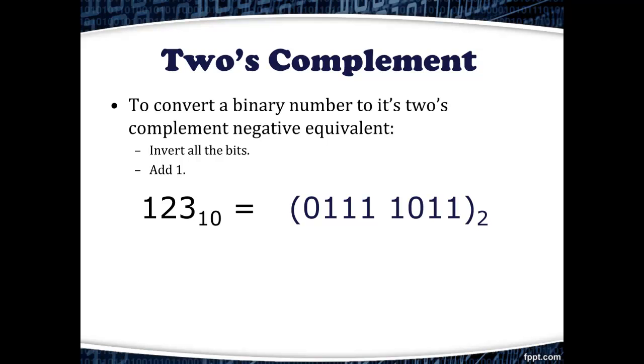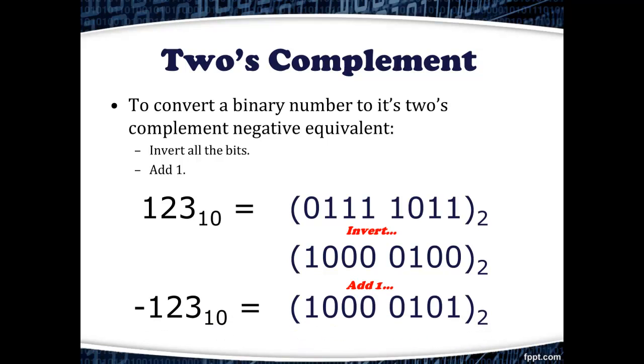As an example, consider the number 123 in base 10. On the right, you see the binary equivalent of that number. To convert this number to its two's complement negative equivalent, we invert all the bits, and then we add 1. The 8-bit value we end up with is the two's complement form of negative 123.